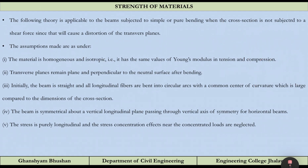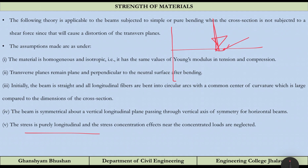The fourth assumption is that the beam is symmetrical about a vertical longitudinal plane passing through the vertical axis of symmetry. Finally, stress is purely longitudinal, and stress concentration effects near concentrated loads are neglected — meaning the very high stresses at small contact areas are ignored and stress is assumed uniform throughout. These are the assumptions of the theory we will derive in the next lecture on the Theory of Simple Bending.